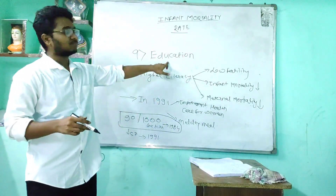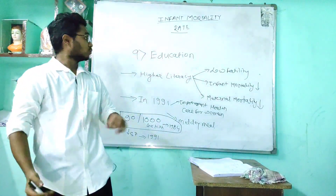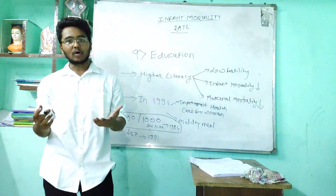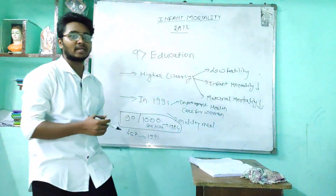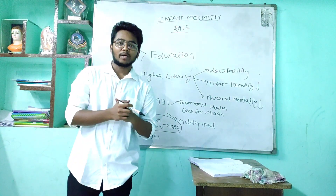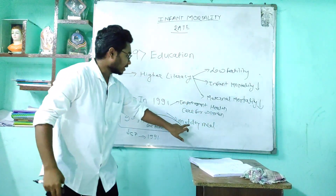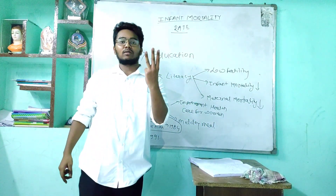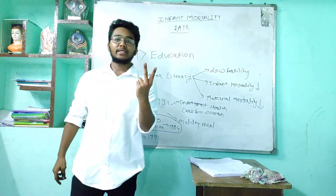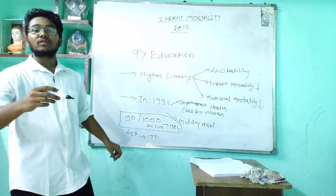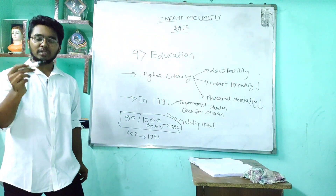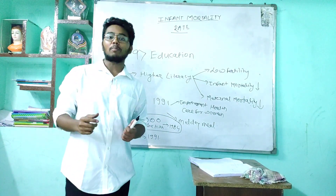The last but not least point is education. Education is very important and is associated with low fertility, low infant mortality, and low maternal mortality. Higher literacy among women is critical. A 1991 study in Tamil Nadu focused on two things: improvement of health care for women and midday meals for children. This led to three dramatic changes: retention of children in school, decreased child mortality, and a dramatic fall in infant mortality rate from 90 per thousand live births in 1984 to 57 per thousand live births in 1991. Education is a weapon that can change the world.